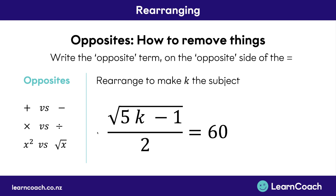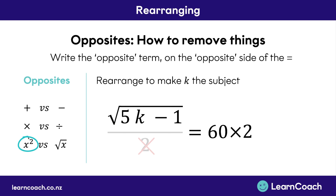So how do we get rid of everything around K? Let's start with the big divided by 2. The opposite of a divided by 2 is a times 2, so we put times 2 on the opposite side of the equals sign, and we can cross out the divided by 2. Next, working our way in towards K, we have this big square root sign. The opposite of a square root is a squared, so we put a squared on the opposite side of the equals sign. If you're squaring something, you have to square everything — put brackets around everything on that side and put a square.